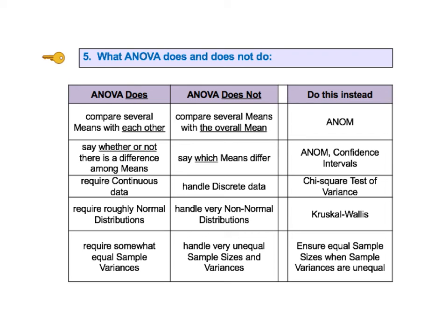It does require roughly normal distributions; it does not handle very non-normal distributions — use the Kruskal-Wallis test instead. It does require similar group variances; it does not handle very unequal sample sizes and variances. When you have unequal sample variances, this can be mitigated by using equal sample sizes.